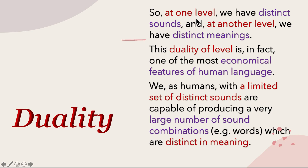So at one level we have distinct sounds, and at another level we have distinct meanings. This duality of levels is in fact one of the most economical features of human language. We, as humans, with a limited set of distinct sounds — like the 44 sounds of English — are capable of producing a very large number of sound combinations, such as words, which are distinct in meaning, allowing us to express ourselves fully.